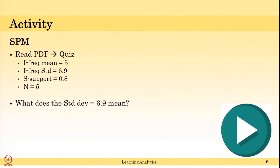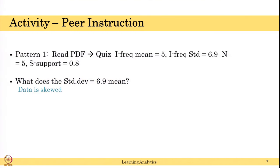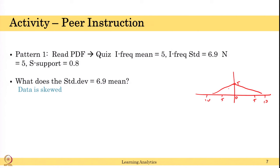Now a trickier question: with the same metrics, what does standard deviation of 6.9 mean? The mean is 5 but 6.9 standard deviation means the data is definitely skewed — the distribution is not a perfect normal curve. Standard deviation greater than the mean suggests skewness. That is why we should consider using the median instead of the mean.